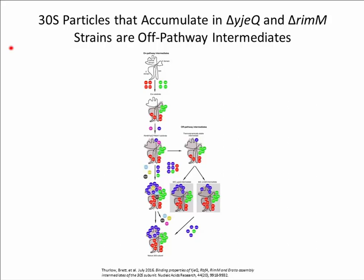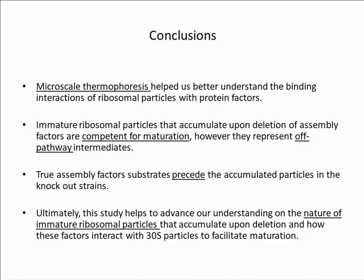This was quite an unexpected result. Our current thinking is that in the absence of assembly factors, the on-pathway intermediates that represent the actual substrate of the assembly factors transition into a thermodynamically stable intermediate that does not exhibit high affinity to the factors. This would imply that the actual substrates are upstream of the accumulated intermediates in the null strains. Consistent with this, recent work has shown that RIMM and ERA increase the rates of association of several earlier binding proteins. By using the QMS analysis and information about the hierarchy of binding from the Nomura assembly map, we can place the particles that accumulate in the null strains at the very late stages of assembly, and more importantly downstream of the particles recognized by assembly factors.